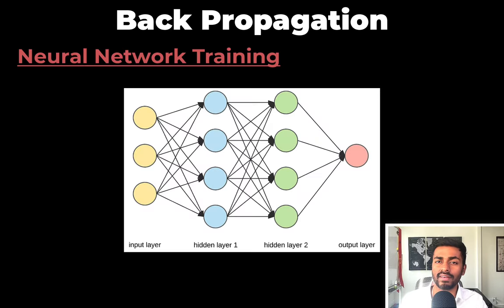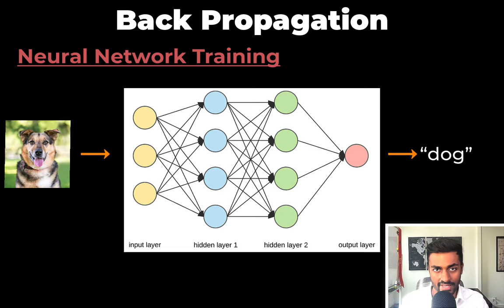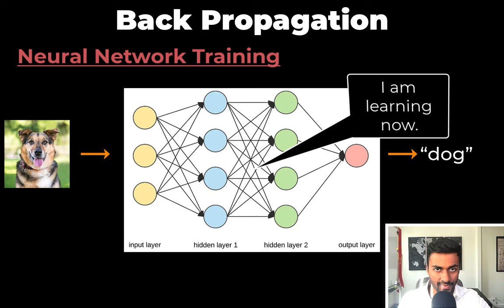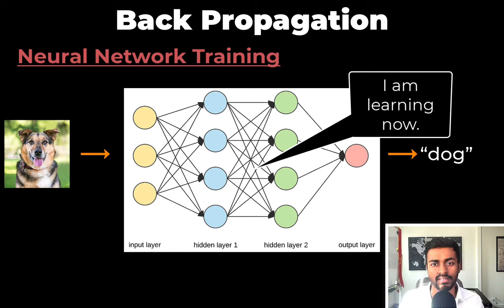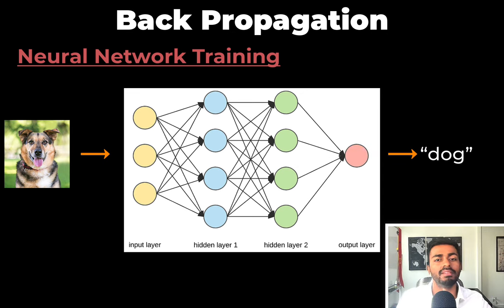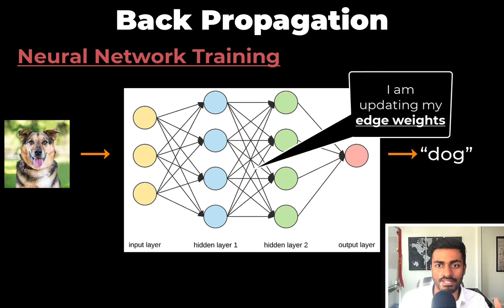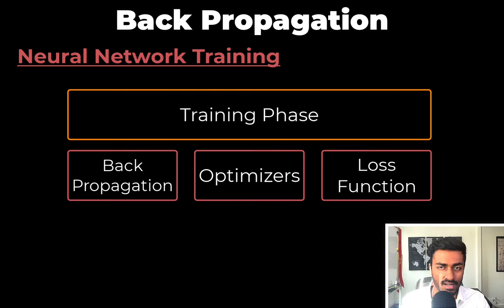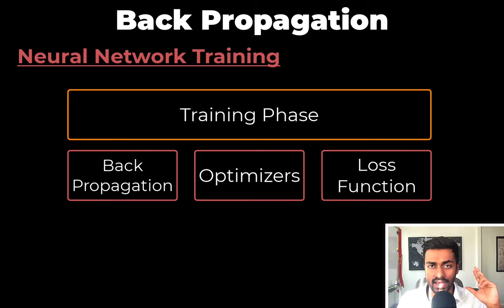Let's go through the training phase again but add some more details. During the training phase, the network is fed pairs of an image and whether that image is a dog or not a dog. In looking at each pair or batches of pairs, the neural network learns. By learning, we mean that the neural network actually updates its edge weights. This is done using three main concepts: backpropagation, optimizers, and a loss function.